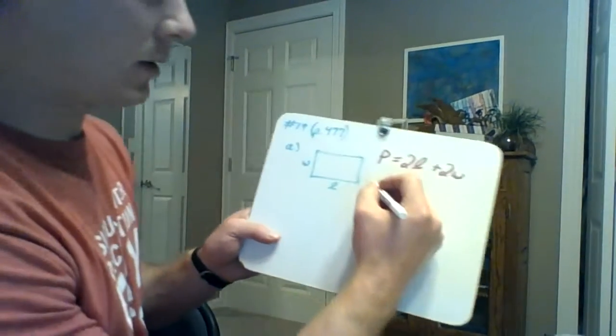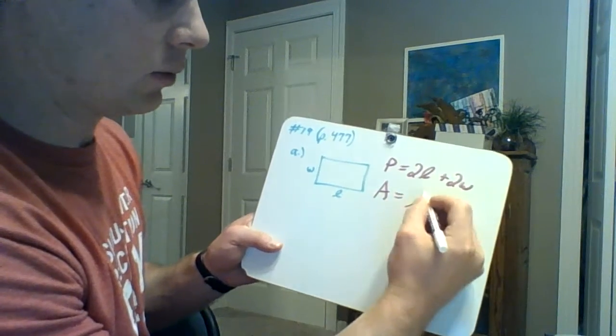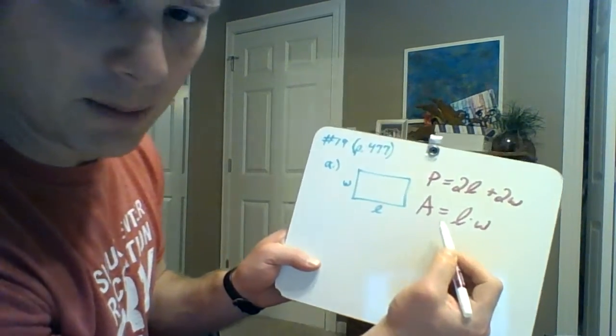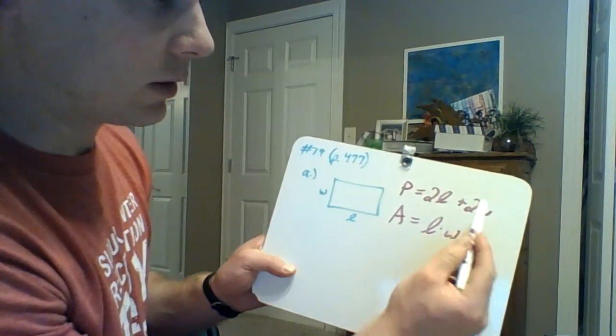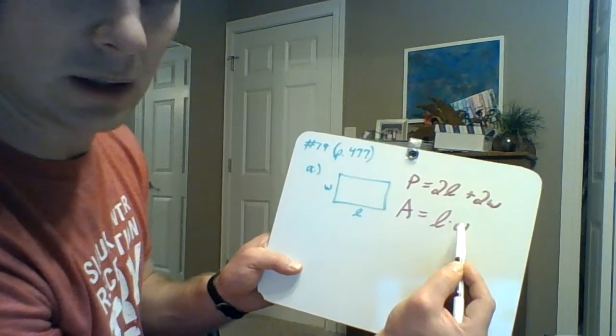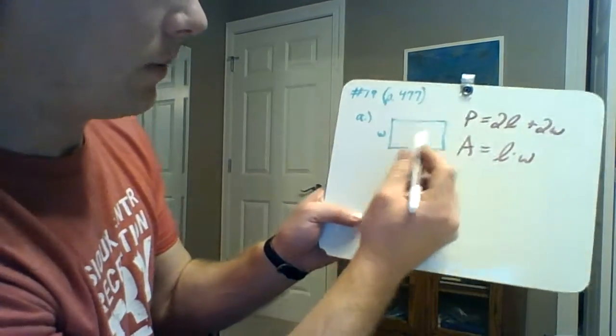And then you have to consider an area equation: area equals length times width. Now it's this area one that we want to be the biggest. So what we're going to do is we're going to do a substitution into this first one and then another substitution into the area.